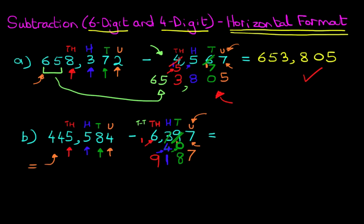Now we move to the ten-thousands. We've got 1 ten-thousand, and we carried 1 over. How many do we need to get to? We need to get to 4. So what number added to the 1 here is going to give us 4? The answer is 3. And lastly we've got the digit 4, which we simply add on. We have arrived at our answer — it is 439,187.